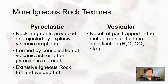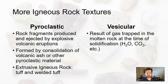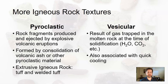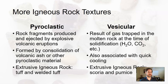Vesicular igneous rocks have vesicles — little holes. That's the result of gas trapped in the molten rock at the time of solidification. Some magma or lava has extra gas in it, and if the material begins to cool, the little air bubbles, water vapor bubbles, or carbon dioxide bubbles get sealed off. This is associated with quick cooling on the surface. Examples of vesicular igneous rocks are scoria and pumice.